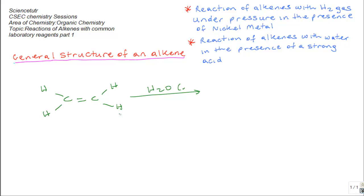And what happens in this reaction is that it is treated in the presence of water, liquid or gas, in the presence of a strong acid. Now in this case, phosphoric acid is used at a temperature of 300 degrees Celsius.